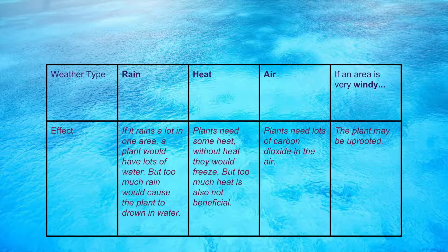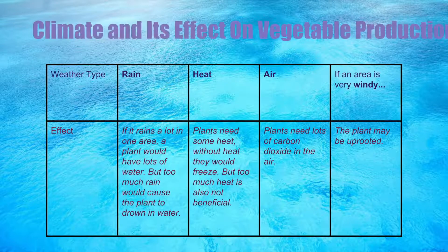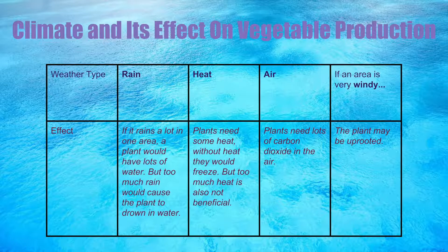Let's examine the following chart for a further look into how climate affects vegetable production. Rain: if it rains a lot in an area, a plant would have lots of water, but too much rain would result in drowning the plant.